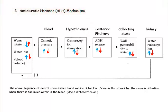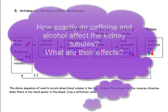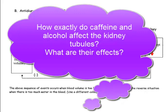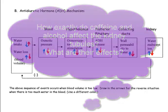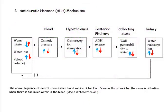Different factors can interfere with this mechanism and make the collecting ducts less permeable to water when they should be more permeable, which would cause dehydration. Some materials that would do that are caffeine and alcohol. So that explains two mechanisms that control body fluid volume.